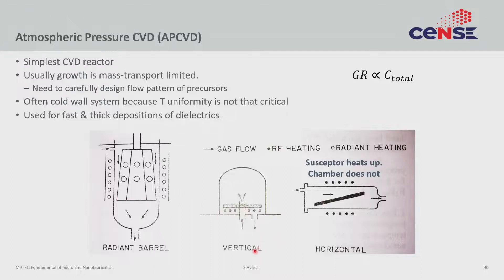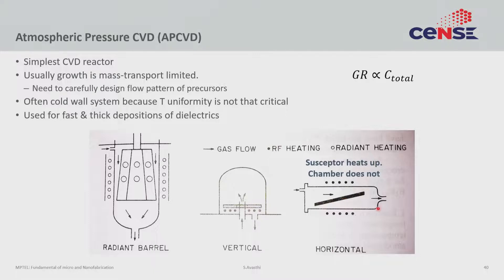AP-CVD reactors take various forms. One example is a radiant barrel reactor — a cold wall tube with radiant halogen heaters that heat the susceptor and wafer. The barrel design angles each wafer facet so that the boundary layer is consistent from top to bottom, giving uniform deposition. There are also vertical reactors where gases flow from the bottom laterally. Another design uses RF induction heating, where a conductive graphite susceptor is heated by induction coils — in both cases the chamber walls do not heat up.